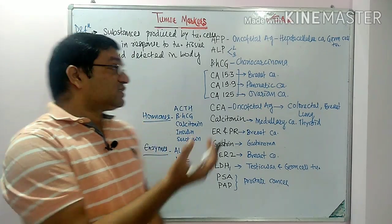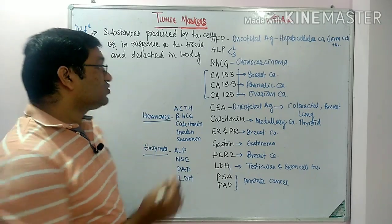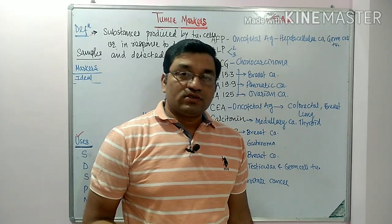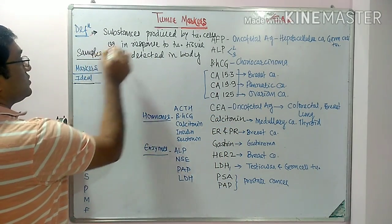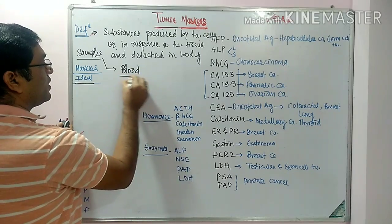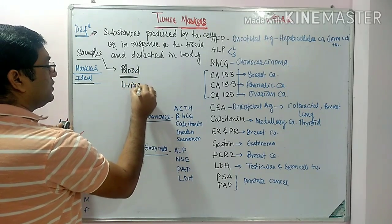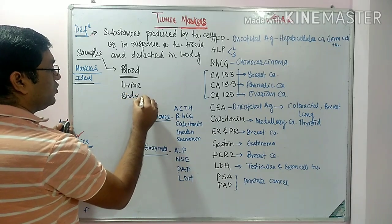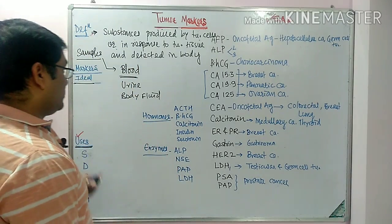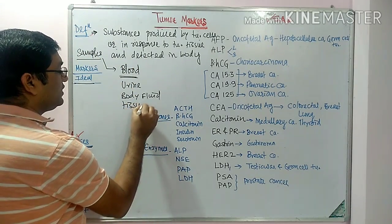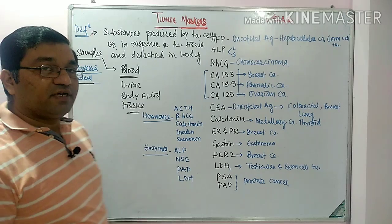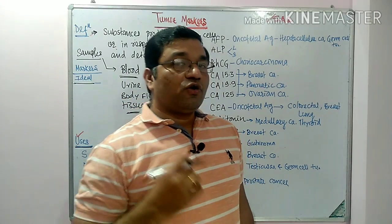Tumor markers are associated with cancer. Which body fluids are used for the estimation of these tumor markers? The first one is blood — serum or blood is the most important. Then urine. Then body fluids, which include ascitic fluid, pleural fluid, cerebrospinal fluid, synovial fluid, etc. And various tissues can also be taken for the estimation of tumor markers.